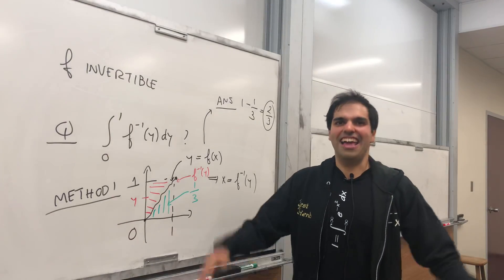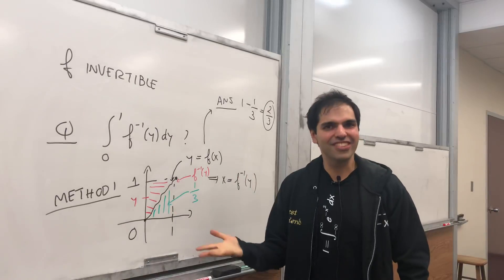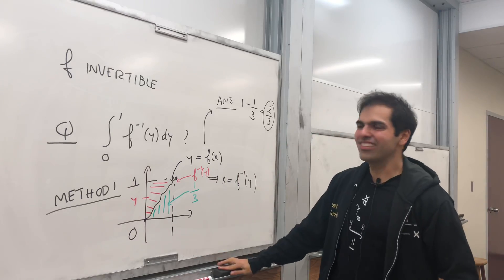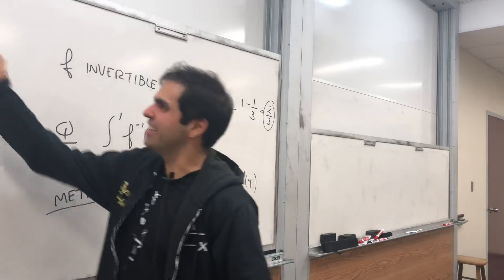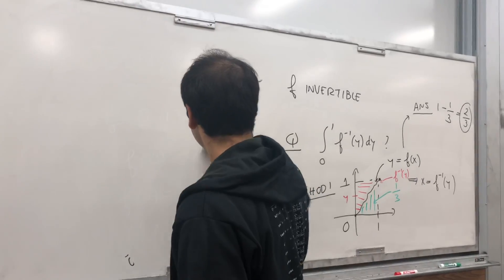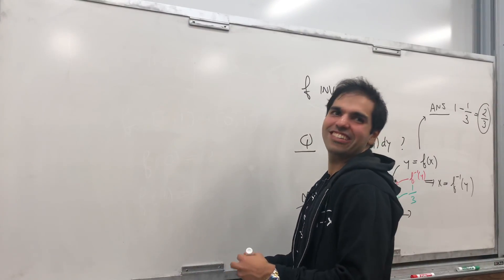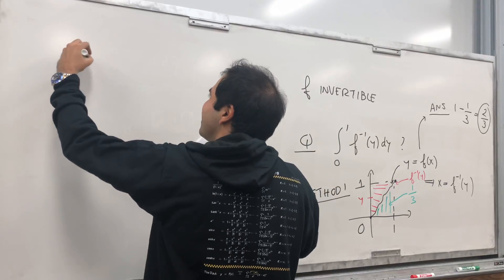What if you're like, I hate geometry, I'm team algebra? Well, I have some good news for you. There's also an algebraic way of doing it using a clever u-substitution. You have another word, man. I do. Damage has already been done. Method 2.